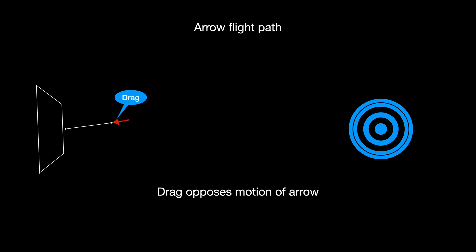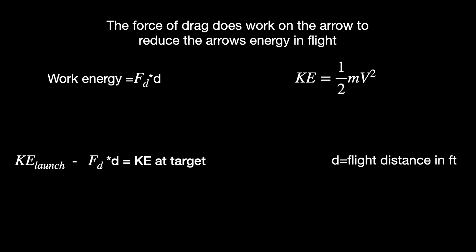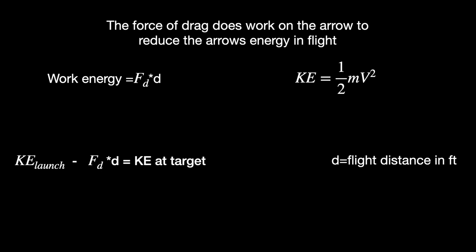First off, what is drag? It's a force that opposes motion of the projectile — in this case, the arrow. What does drag do? Drag applies a force over the distance the arrow is shot, which reduces the arrow's energy. From the previous video, you'll remember that force times distance is work, and that's a form of energy.